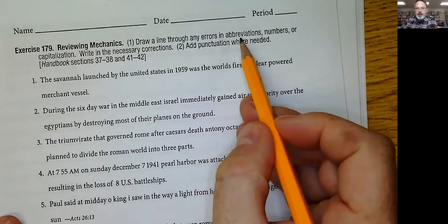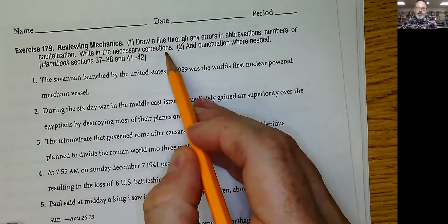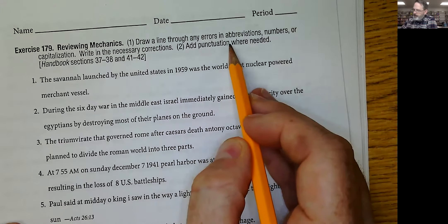Draw a line through any errors in abbreviations, numbers, or capitalization, and write the necessary corrections. Add punctuation where needed.